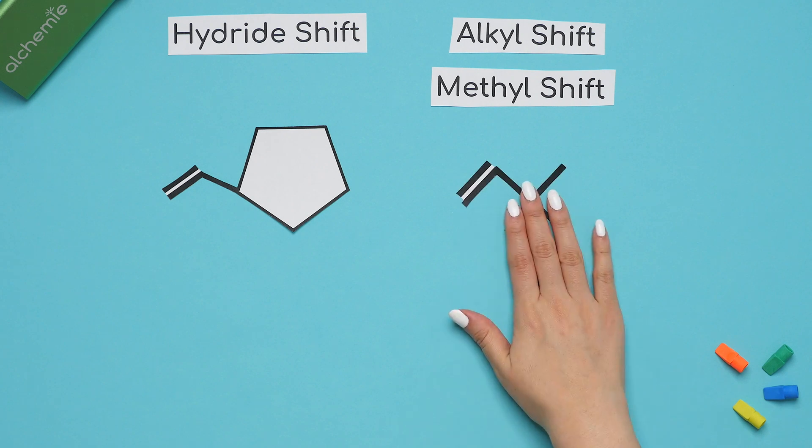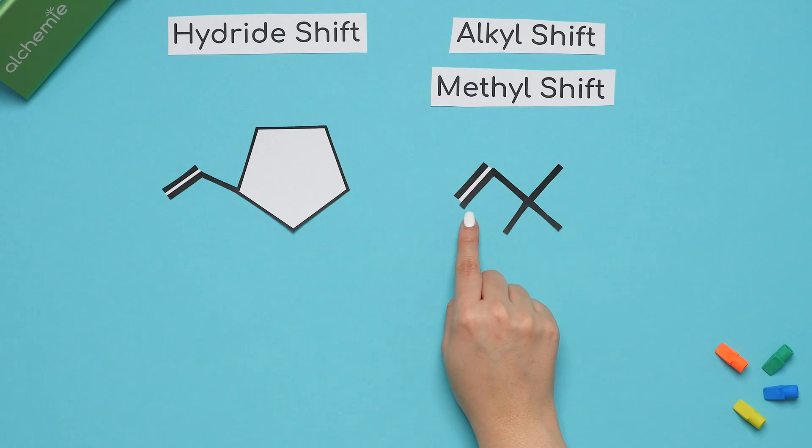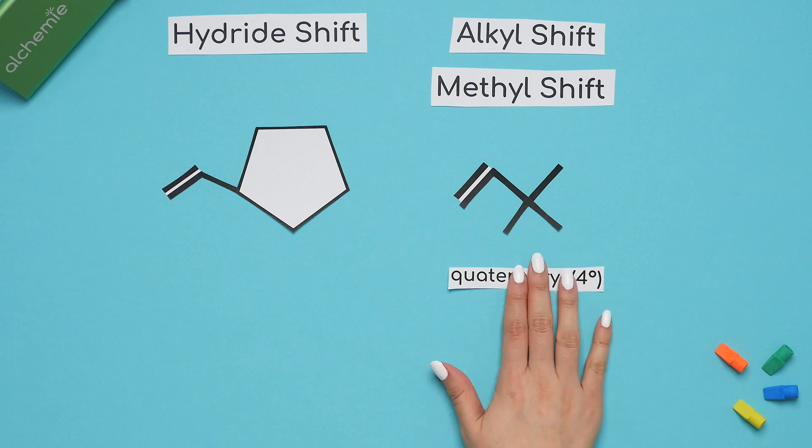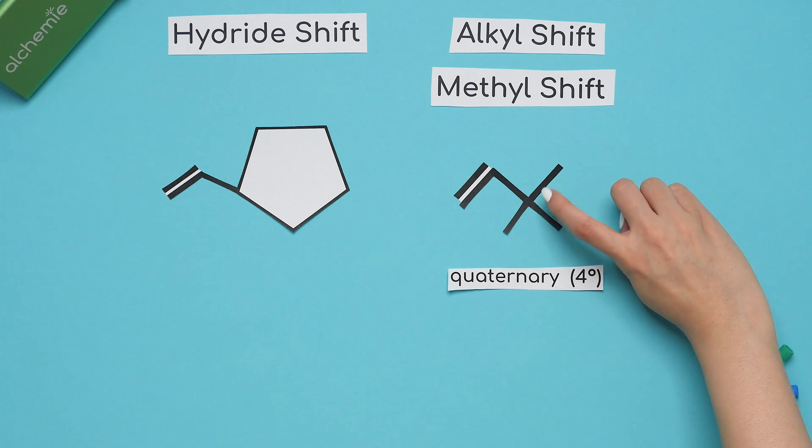Your clue to do a methyl shift or alkyl shift is when a double bond is next to a quaternary carbon. A quaternary carbon is when a carbon is attached to four different carbons.